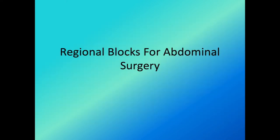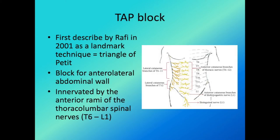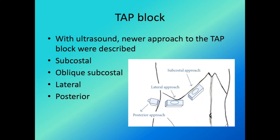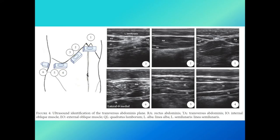The TAP block is not unfamiliar — it was introduced as early as 2001 as a blind landmark technique. It is used to block the anterior lateral abdominal wall, mainly from T6 to L1. Now with ultrasound we are able to define more clearly the different approaches to the transverse abdominis plane.